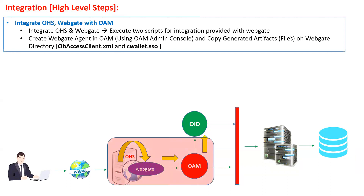There are two major high-level integration steps. First, integrate your OHS and WebGate with OAM. Second, configure the OAM and OID integration. For Step 1 — once OHS is installed and WebGate is installed on top of it — the integration of OHS and WebGate is straightforward: you simply execute two scripts that come with the WebGate. I will demonstrate this practically in my next session.